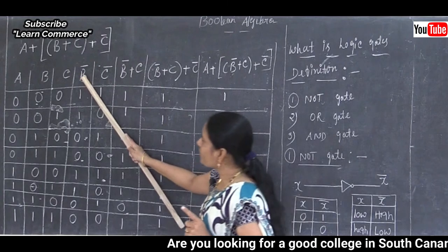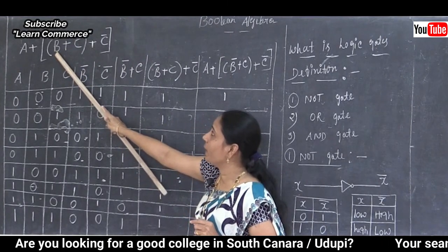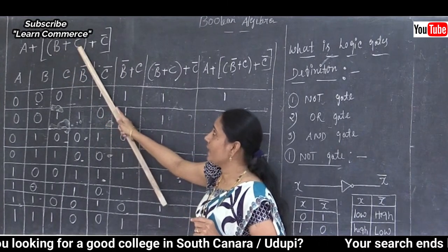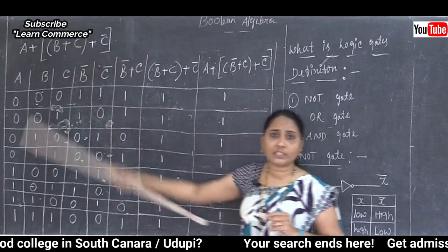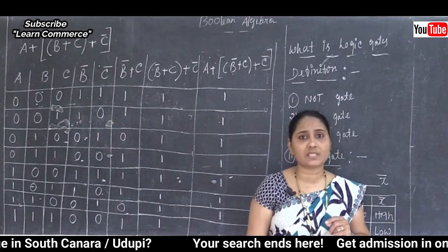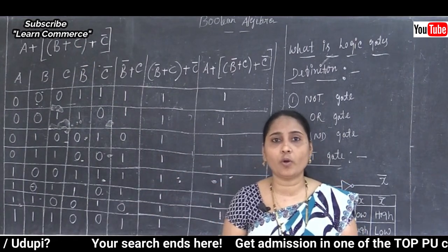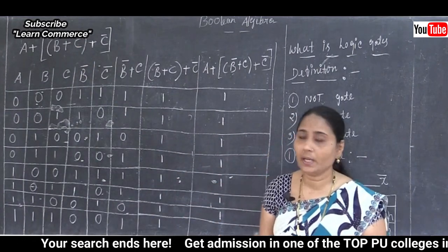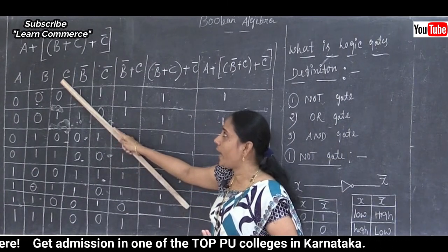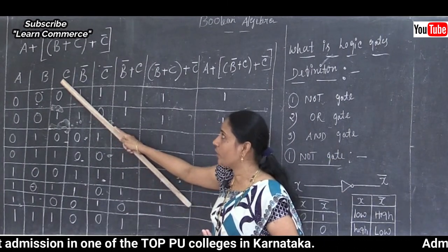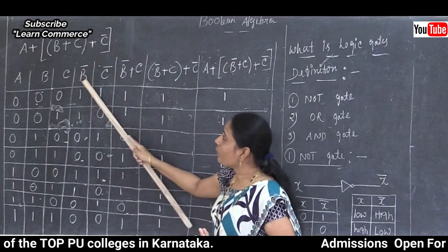Inside the parentheses, the values are complement B and C. We already know the value of C, so we need to calculate complement B. We have already added the value for column C.